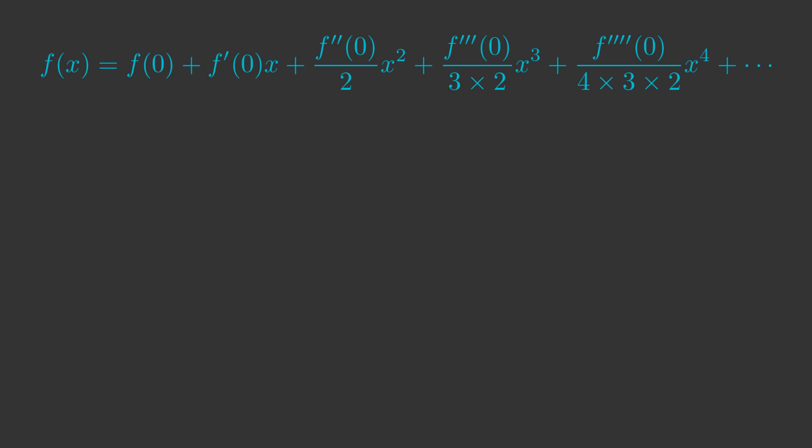First notice the denominators. For the a to the 4th term it is 4 times 3 times 2, which is 4 factorial. This arises because we differentiate x to the 4, x cubed, x squared and x, giving a multiplier of 4 times 3 times 2 times 1.